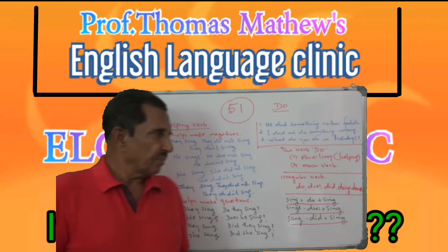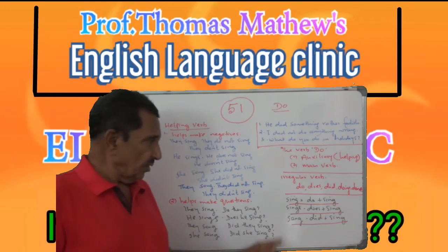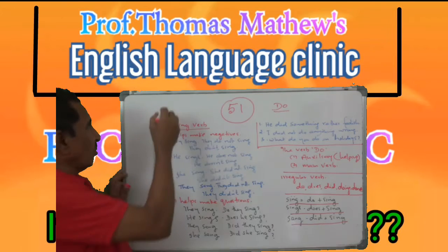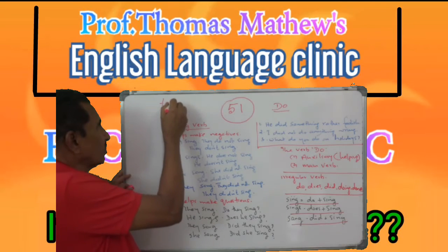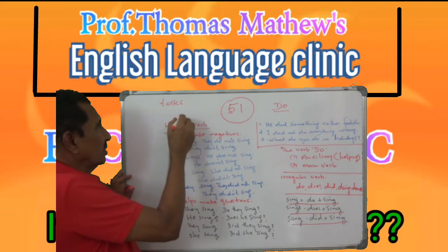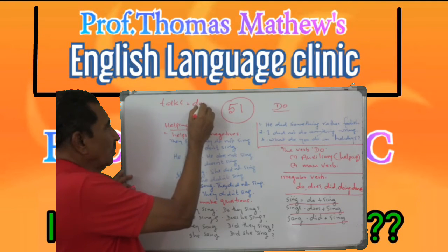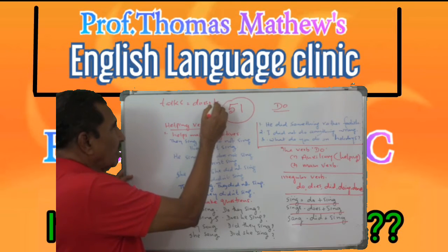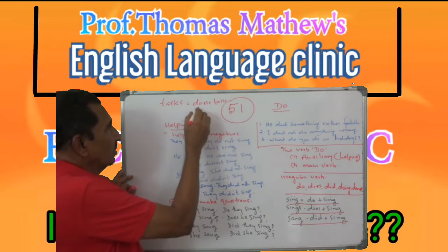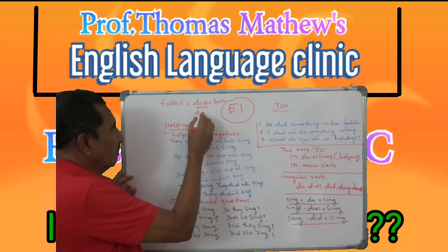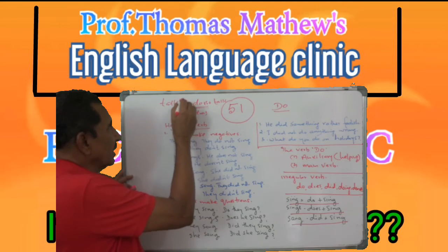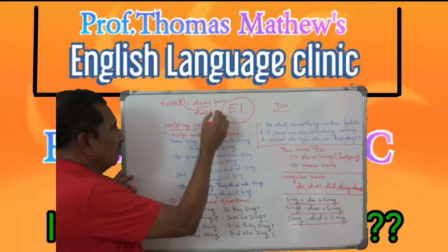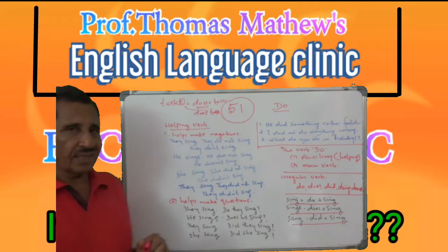If this is not clear to you, take another example. 'Talks' is equal to 'does talk': 'do' plus S gives 'does.' So this S is taken from 'talks' and added to 'do,' it becomes 'does,' and what remains is only 'talk.' That is clear.